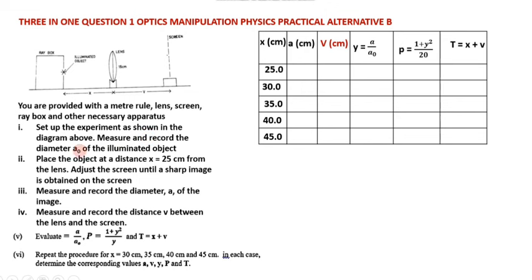Measure and record the diameter A₀ of the illuminated object. Place the object at a distance X equal to 25 cm from the lens. Then adjust the screen until a sharp image is obtained on the screen — the distance between the image and the screen is V. Measure and record the diameter of the image, that's A. So the diameter of the image will be A and the diameter of the object is A₀.